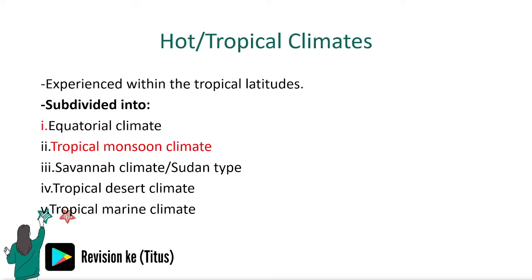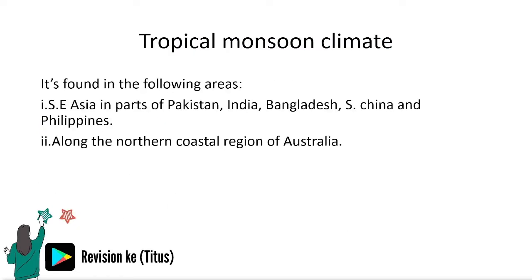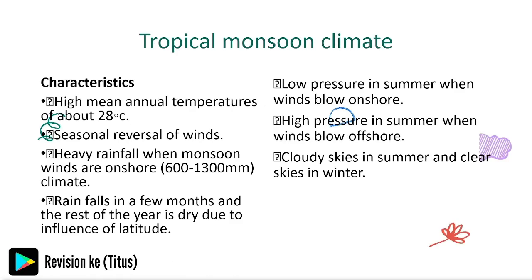The tropical monsoon climate is found in Southeast Asia, in parts of Pakistan, and also along the northern coastal region of Australia. You can pause the video to look at the characteristics.